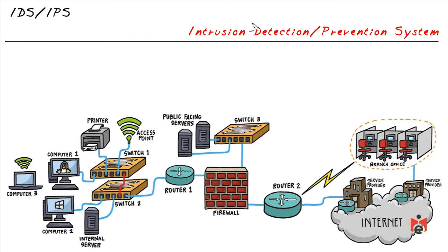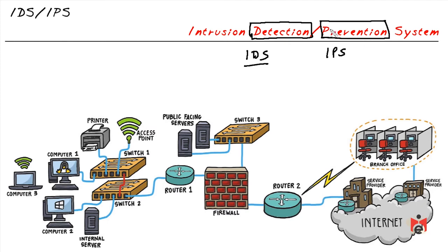The key difference between IDS and IPS: an intrusion detection system simply sounds an alarm — 'hey, this is happening' — so we can investigate. An intrusion prevention system not only identifies the suspicious activity but can also prevent it from propagating further by dropping the traffic or taking other countermeasures to stop the attack from being successful.